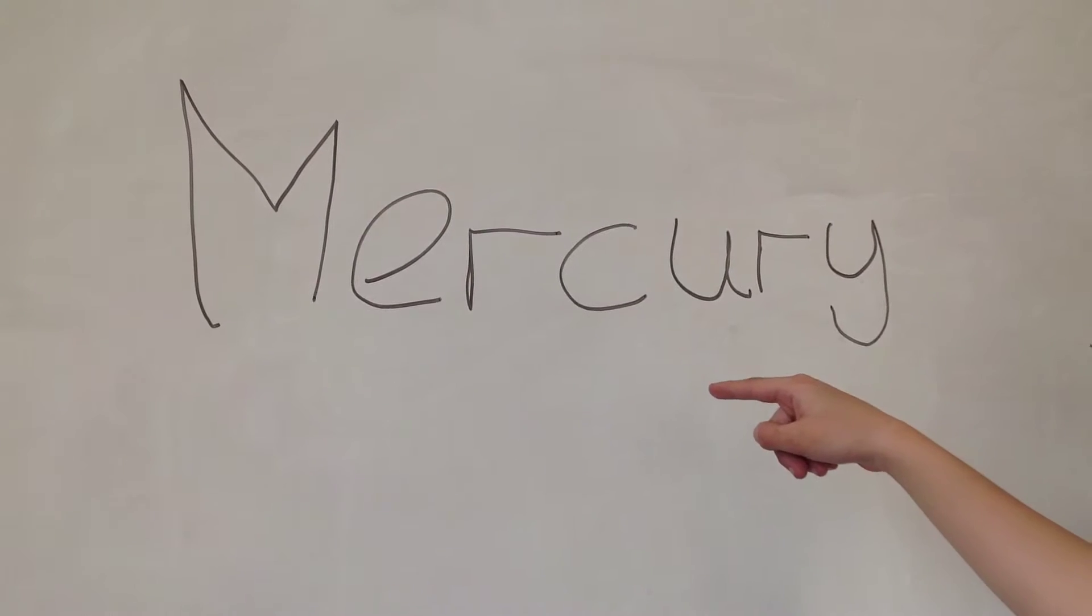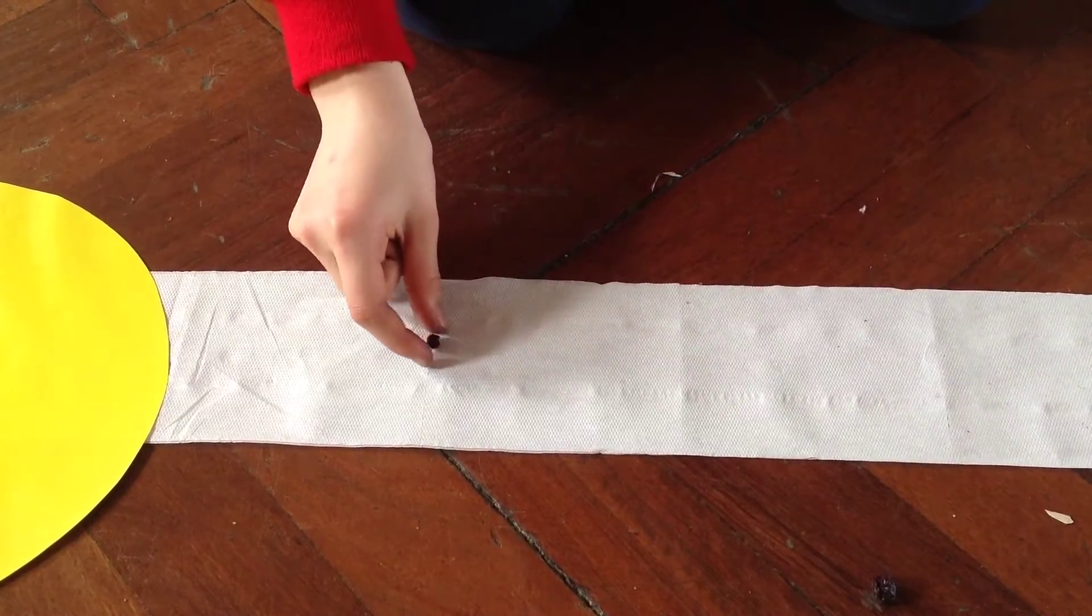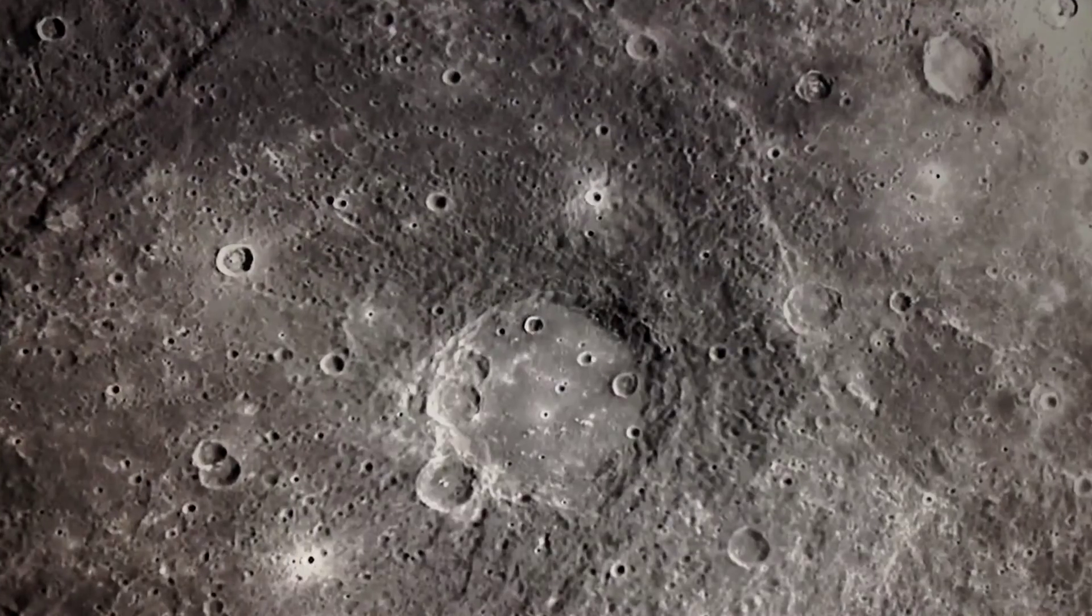Mercury. It's the smallest planet in our solar system and is the closest to our sun. With our fruit solar system, it would go here. Mercury can get hotter than 400 degrees. But deep within its craters, there are places that never see sunlight. We think there is ice.